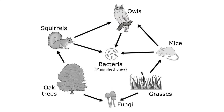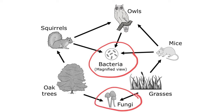Here's what it might look like when decomposers are shown in a food web. The bacteria are getting energy from the squirrels, owls, and mice — but the bacteria aren't killing and eating those things. When the squirrels, owls, and mice die, the bacteria decompose them, and that's when it gets its energy from them. Similarly, the fungi get energy from the oak trees and grasses when dead leaves and branches fall or the oak trees die — that's when the fungi consume and decompose the dead organisms in this ecosystem.